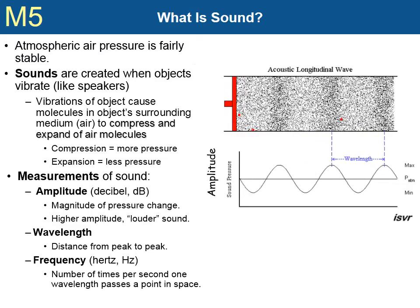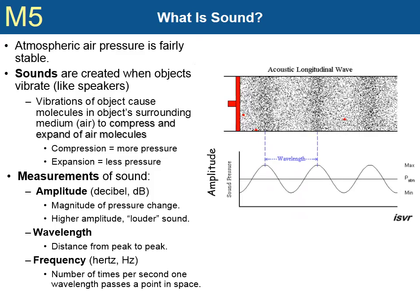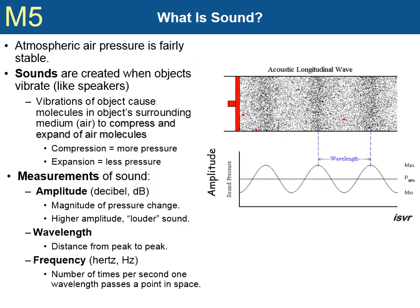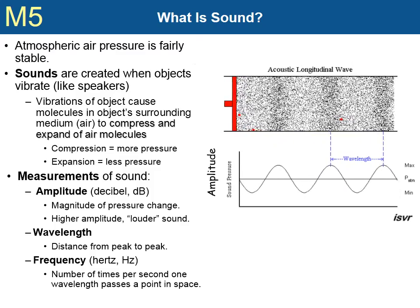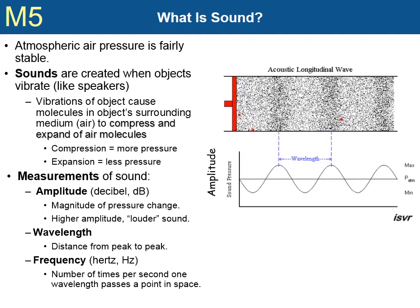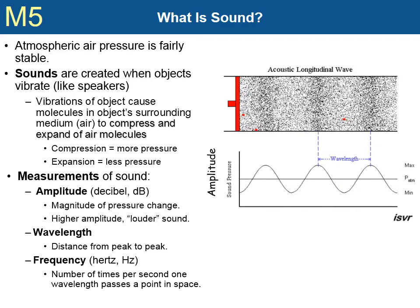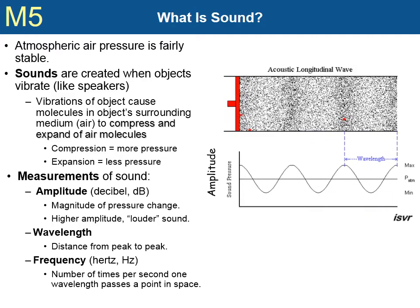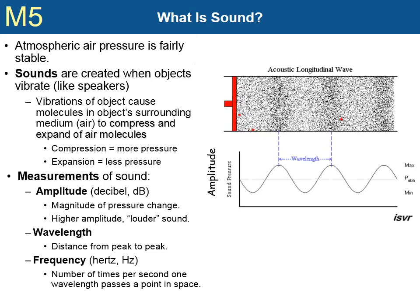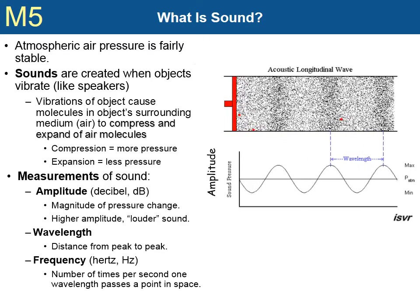These waves are measured in several ways. The amplitude is the magnitude or amount of pressure change. The wavelength is the distance of one complete cycle, shown here as being measured from peak to peak. The frequency is the number of times per second one complete wave cycle passes a point in space. Longer wavelengths have lower frequencies.